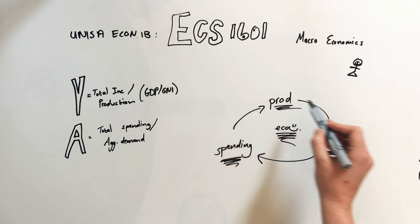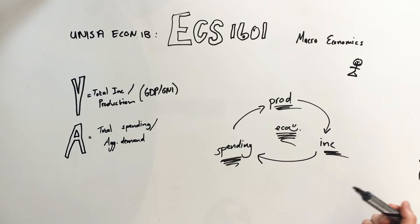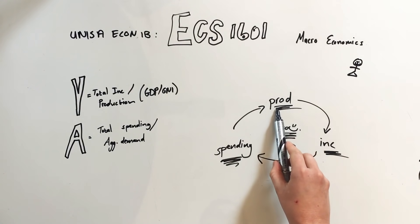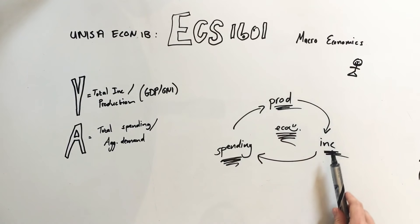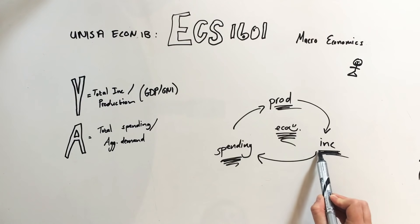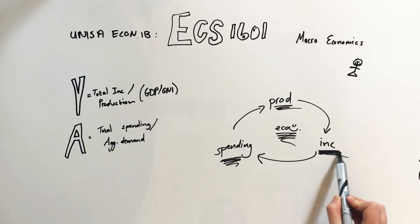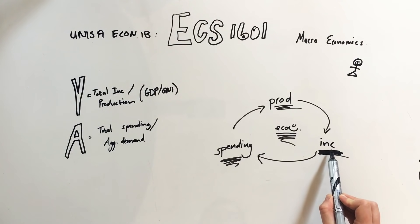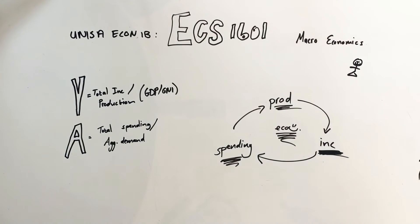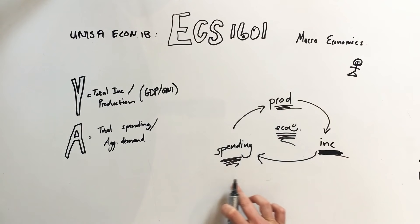If you look at jobs and factories, there are people producing things. Because they're producing, they get income for it. With that income they pay laborers, they earn profits, and all of those things — and then they spend again, and the economy just keeps on turning like this. It looks quite simple but it's very, very important. So we have production, income, and spending, and it works in a circle.